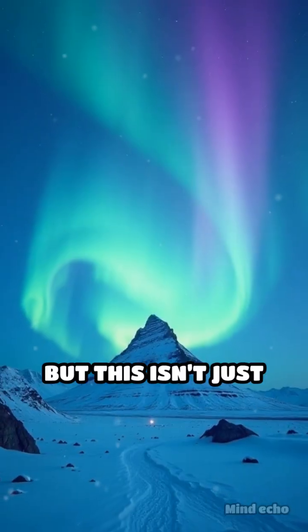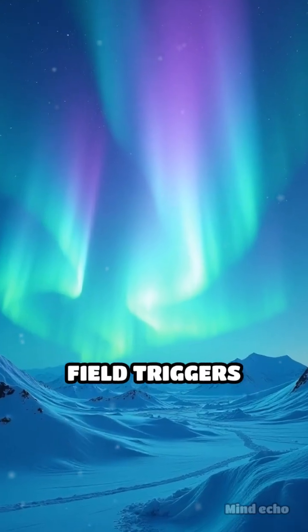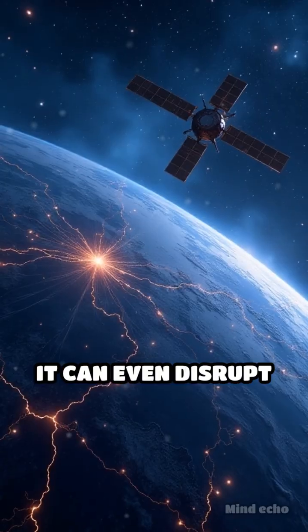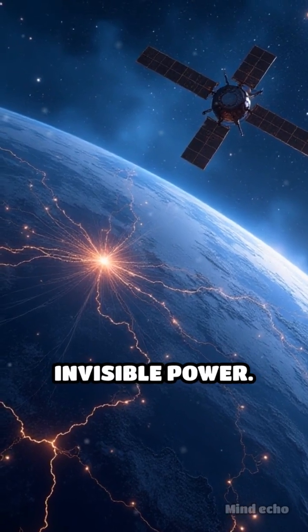But this isn't just about defense. The solar wind's dance with our magnetic field triggers dazzling auroras, lighting up polar skies with ribbons of color. It can even disrupt satellites and power grids, a reminder of its invisible power.